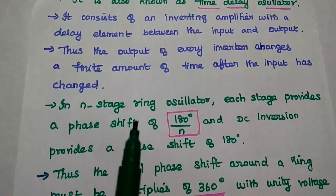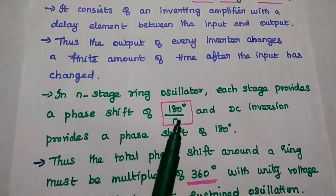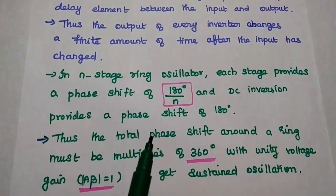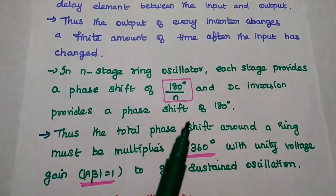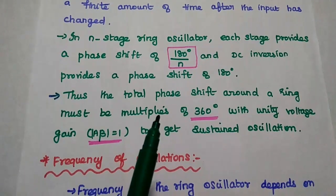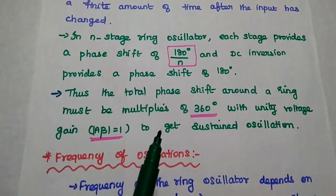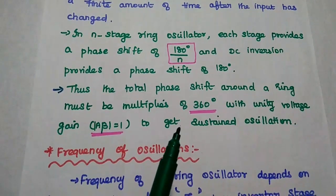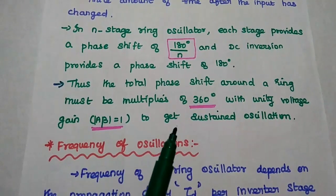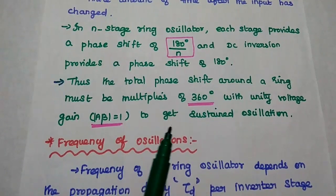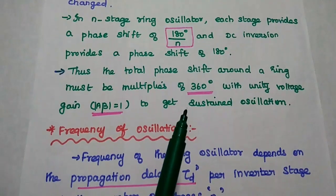So in an N-stage ring oscillator, each stage provides a phase shift of 180 degrees by N and DC inversion provides a phase shift of 180 degrees. Thus the total phase shift around a ring oscillator must be the multiples of 360 degrees with unity voltage gain, that is A beta equals 1, to get the sustained oscillation. So these two are the Barkhausen criterion for oscillators.